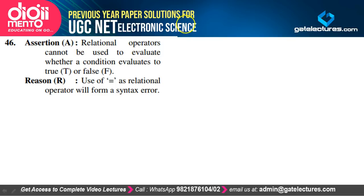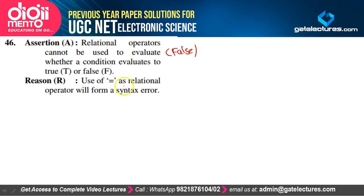Relational operators cannot be used to evaluate whether a condition is true or false — this statement is itself false; relational operators can be used for this. Use of '=' as a relational operator will cause a syntax error — true. Option D satisfies our explanation.